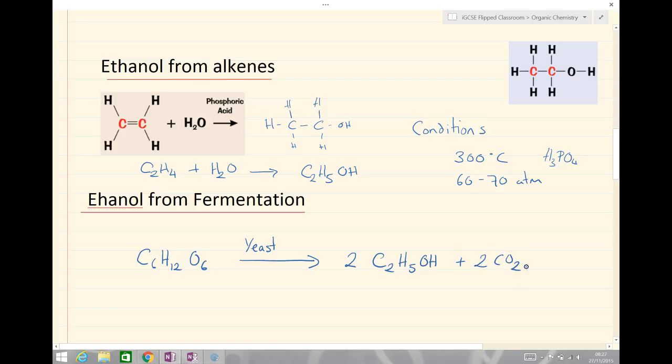This process is done at around about room temperature, slightly above 30 to 40 degrees Celsius and one atmosphere pressure as our conditions. The yeast is acting as a catalyst, but our product is less pure. We tend to get no more than 5% purity, whereas our ethanol from alkenes is normally about up to 100% purity.